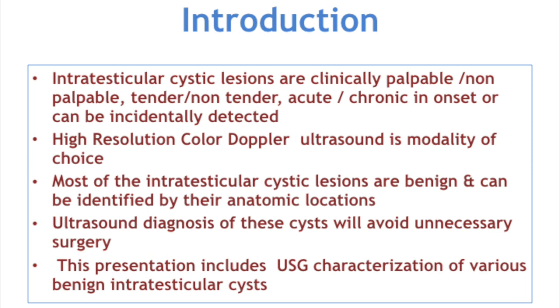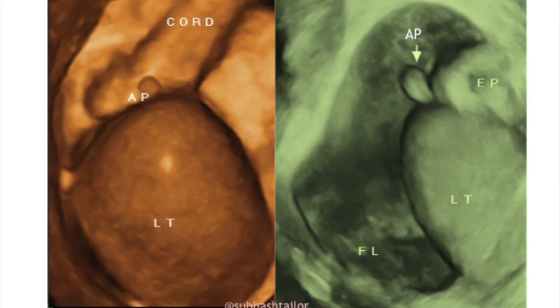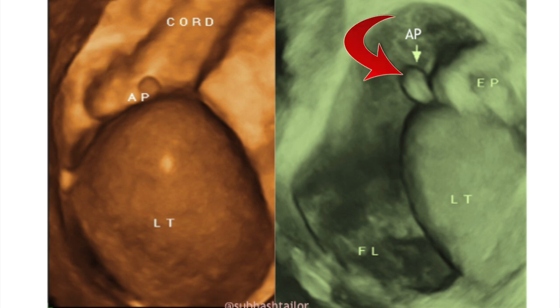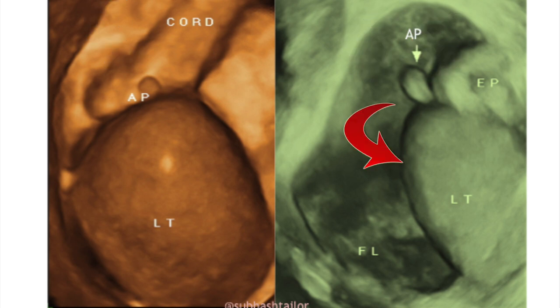This presentation includes ultrasound characterization of various benign intratesticular cysts. When there is a fluid collection in the scrotal sac, we can even make 3D reconstruction of scrotal contents as we can see in these two images beautifully — the spermatic cord, appendix of the testes, epididymis and testicular outline in particular.